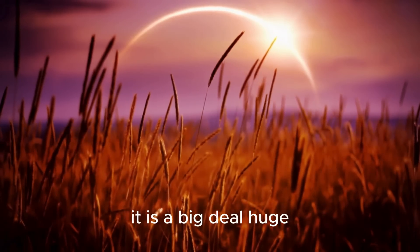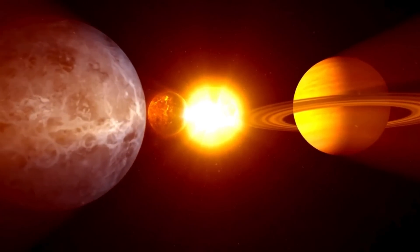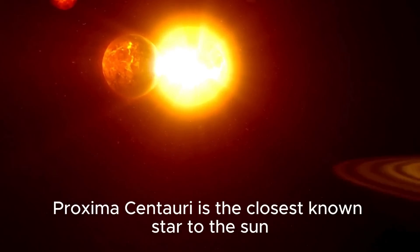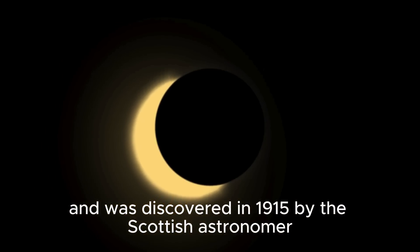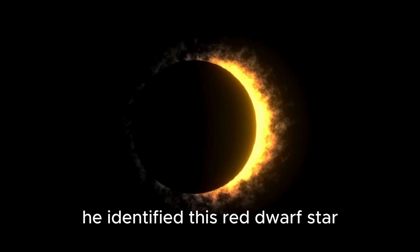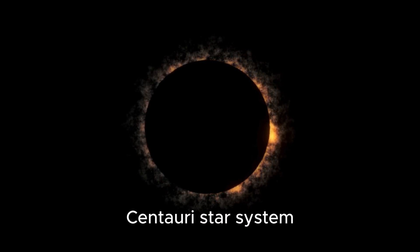It is a big deal, huge! Stick with us to see why it matters so much. Proxima Centauri is the closest known star to the Sun and was discovered in 1915 by the Scottish astronomer Robert Innes. He identified this red dwarf star as the closest member of the Alpha Centauri star system.